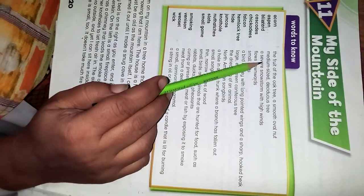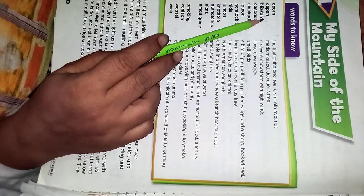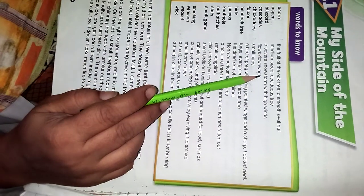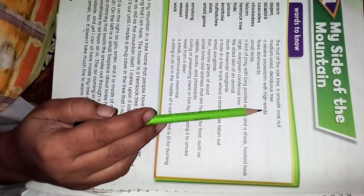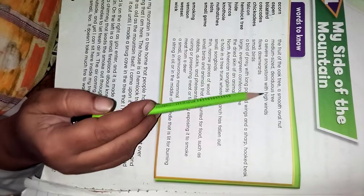Aspen: medium-sized deciduous tree. Blizzard: a severe snowstorm with high winds.